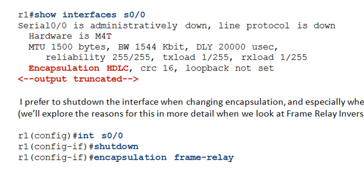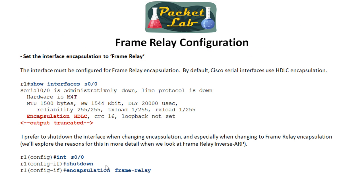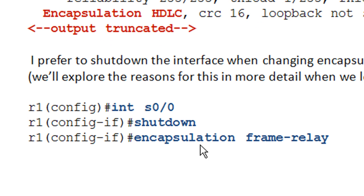Plus, if you're changing encapsulation, it's not something you're going to do seamlessly — you're not going to jump in the middle of a production day and change from Frame Relay to PPP without dropping traffic. Your traffic isn't going to flow over this interface until you've completed your configuration, generally on both sides of the link. So there's no good reason not to have the interface shut down when making these configurations. The command to switch the interface encapsulation to Frame Relay is simply: encapsulation frame-relay.